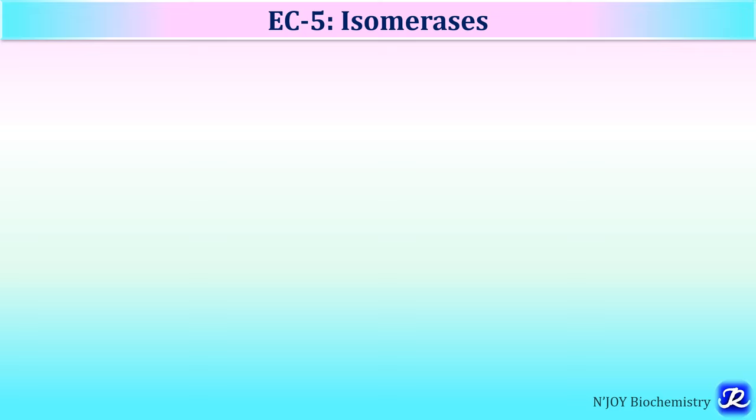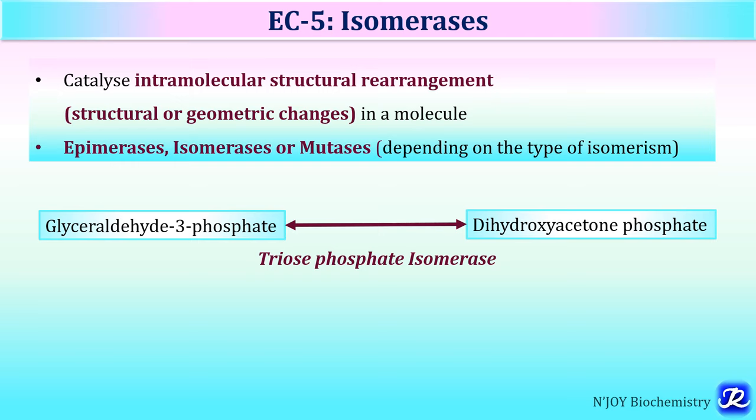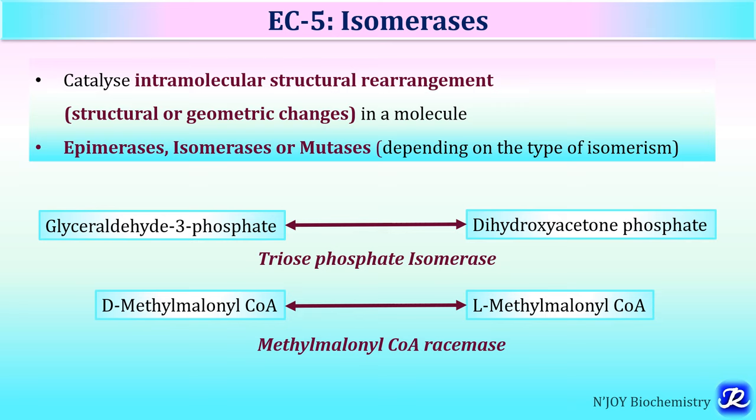EC5 is isomerases. Isomerases catalyze intramolecular structural rearrangements — structural or geometric changes in a molecule. They are also called epimerases or mutases depending on the type of isomerism involved. For example, glyceraldehyde-3-phosphate and dihydroxyacetone phosphate are interconvertible by triosephosphate isomerase. D-methylmalonyl-CoA and L-methylmalonyl-CoA are interconverted by methylmalonyl-CoA racemase.